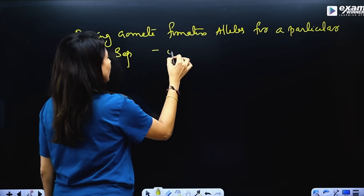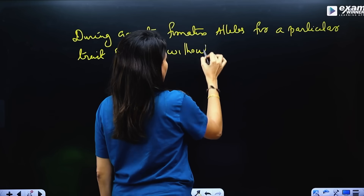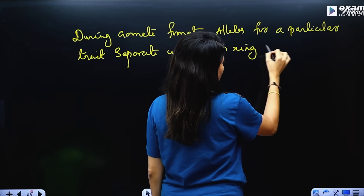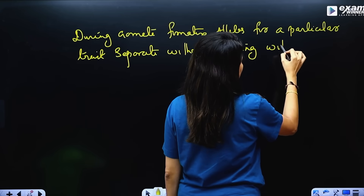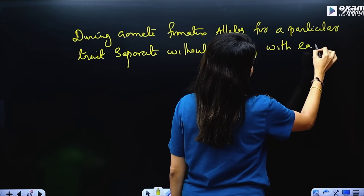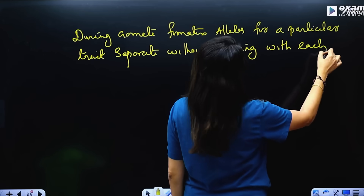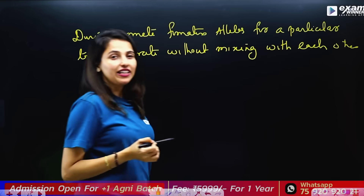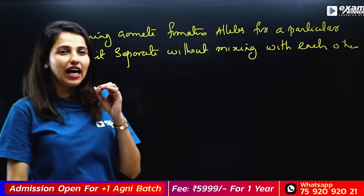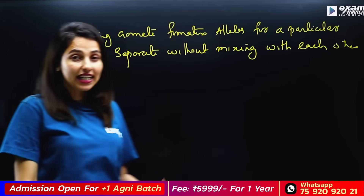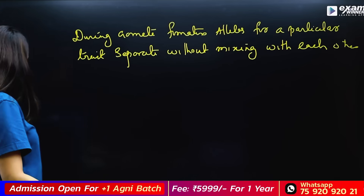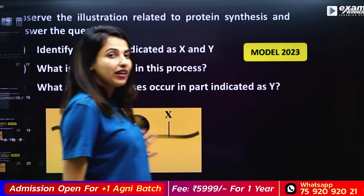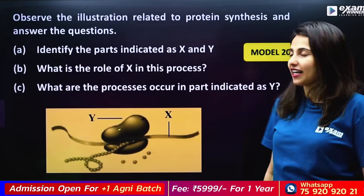The alleles separate without mixing with each other — they pass to different gametes. The alleles segregate from each other during gamete formation — that is because of the alleles separating.